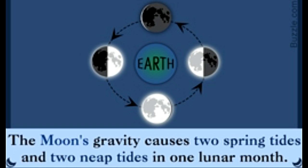Everybody knows that the emergence and schedule of tides has something to do with the moon's gravity. Well, it does, but there is much more to it. Tides are actually formed by the gravitational interplay between the earth, the sun, and the moon. While the earth's superior gravity keeps the moon in check, the latter also influences proceedings on earth with its significant gravity.